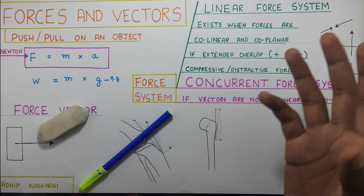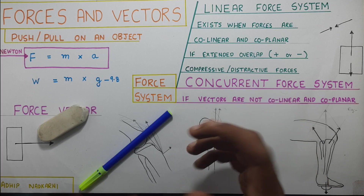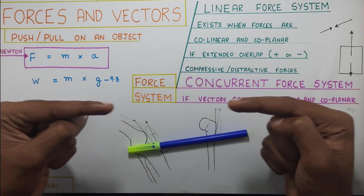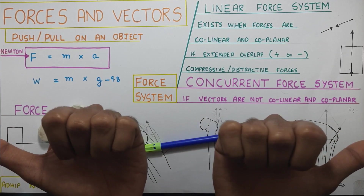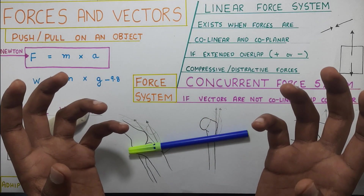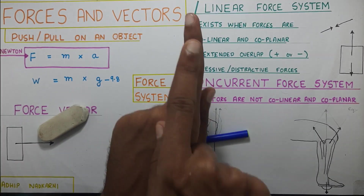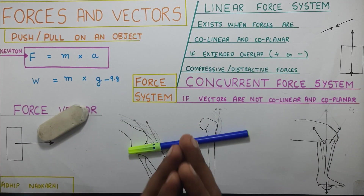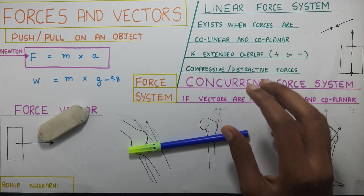These linear forces can be seen in two types: compressive and distractive. Compressive is when two forces come towards each other, and distractive is when they go away from each other — in both cases they subtract from each other. If the forces are in the same direction, they add to each other. That's how the linear force system works.